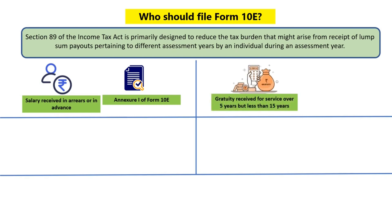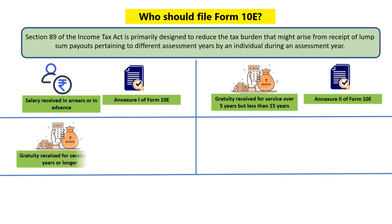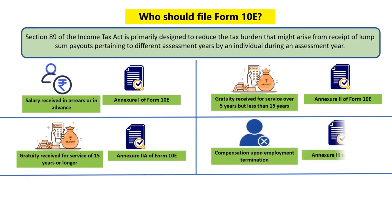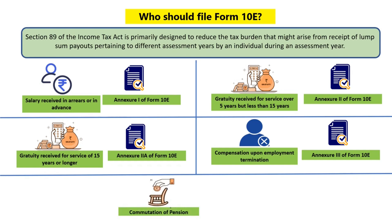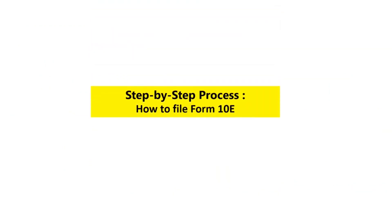If the assessee receives gratuity for service over 5 years but less than 15 years, to claim a relief under Section 89 you are required to fill Annexure 2 of Form 10E. In case of gratuity received for service of 15 years or longer, Annexure 2A of Form 10E shall be applicable. For compensation on termination of employment, Annexure 3 of Form 10E is required to be filed. In case of commutation of pension, Annexure 4 of Form 10E shall be applicable for claiming relief under Section 89.